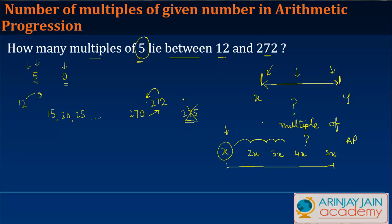If you notice what has happened here is we have got an arithmetic progression starting with 15 and ending with 270. What do we need to find out? We need to find out how many multiples are there, so effectively we need to find the count of how many terms are there in this AP.